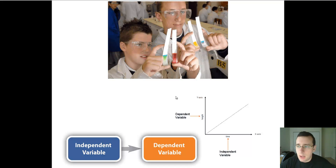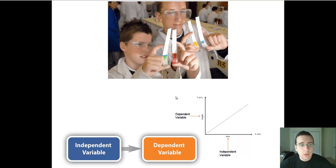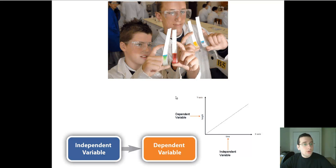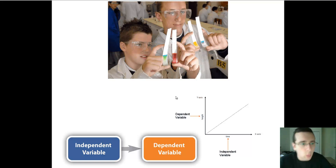On our last video, we talked about using correlational studies to test data when you cannot control things. In this video, we're going to focus on controlled experiments, and this is what scientists want to do all the time.